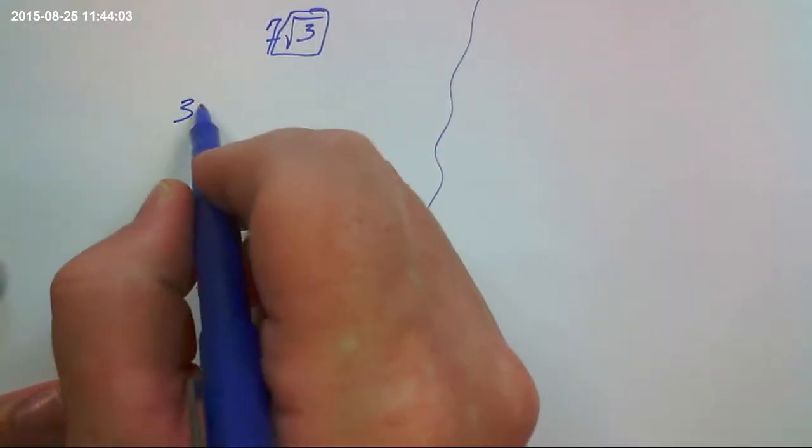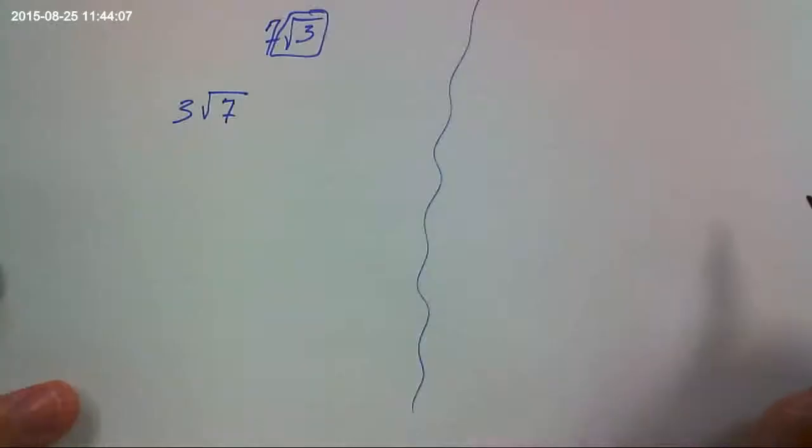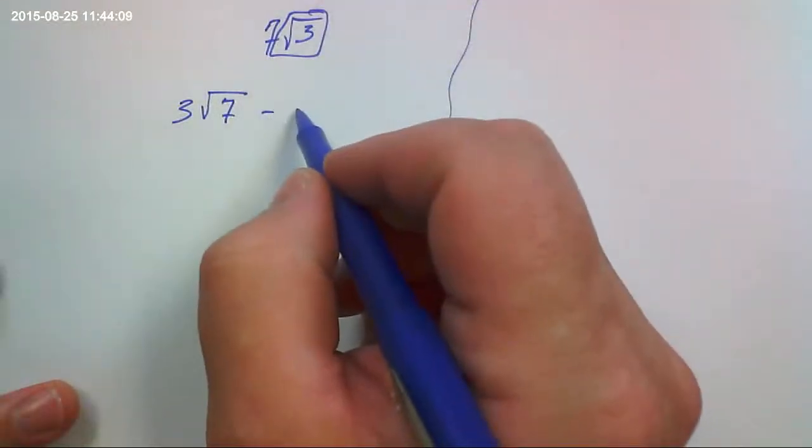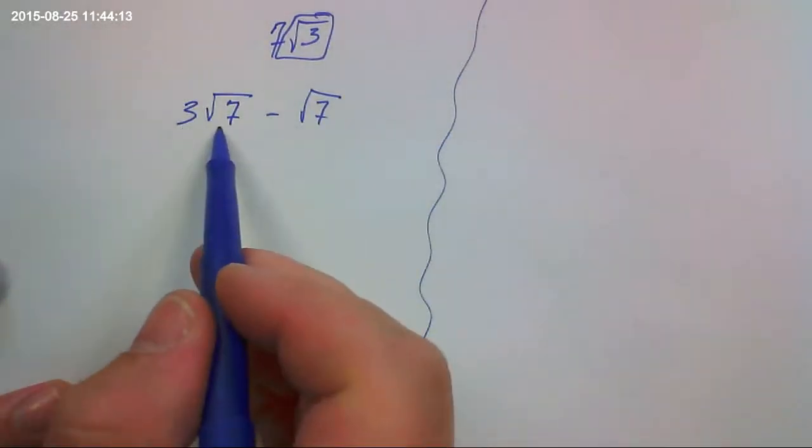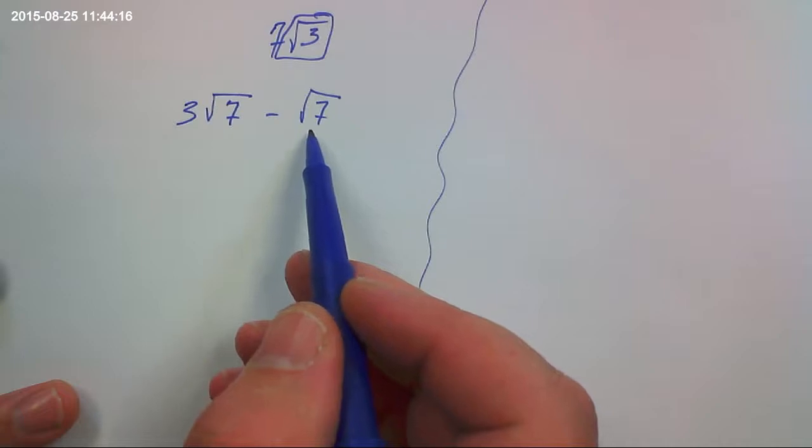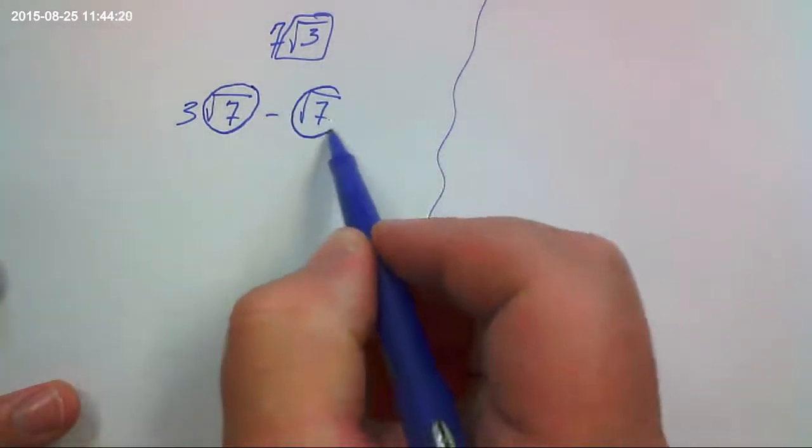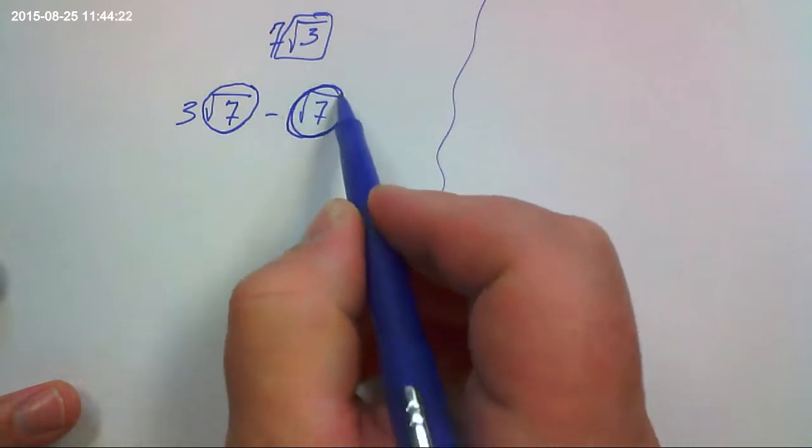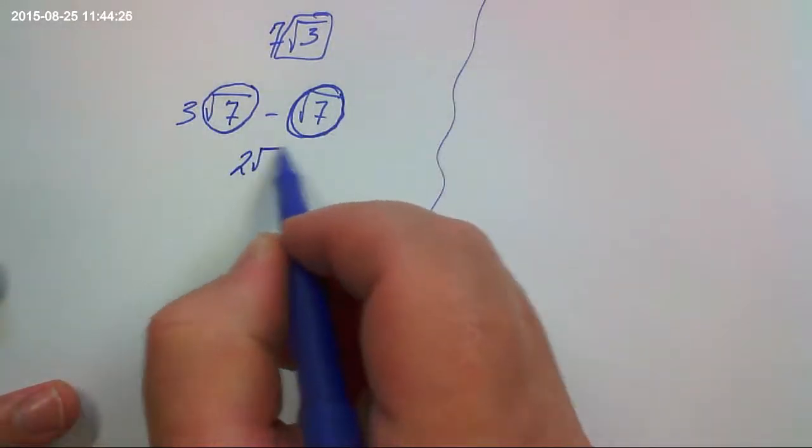The rules for subtraction would work the same way. So let's say we had 3 times the square root of 7 minus the square root of 7. Well here we have 3 of these and we're subtracting one of them. Yes, the these and the them are the square roots of 7, but it doesn't matter what they are. All that matters is that they are the same. So 3 apples minus 1 apple would be 2 apples.